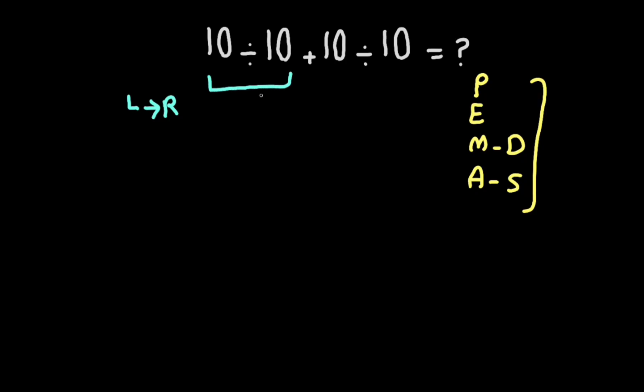And 10 divided by 10 gives us one. At the end we have one plus one, so one plus one is equal to two. So the final answer is two.